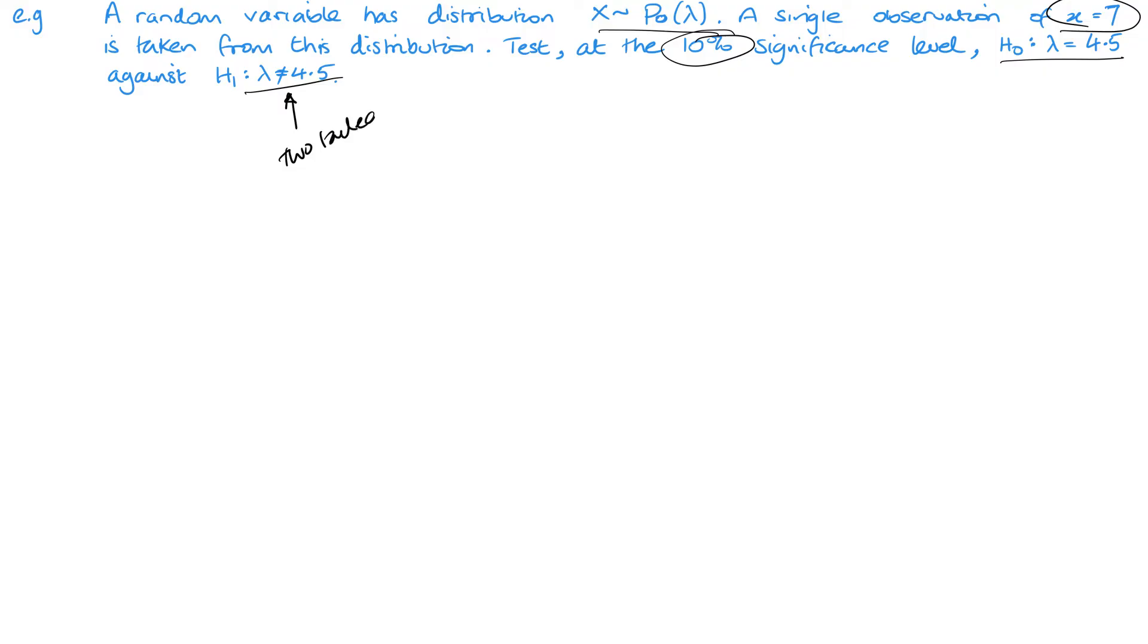Noticing that here this is a does not equal, so it's got to be a two-tailed test. Now I often write, essentially label it notes, but I do often write a few little notes on the side when I'm reading the question just to help me. I know that I'm going to be dealing with the Poisson and that value of lambda is actually going to be 4.5. I know I'm dealing with x is 7. I know that it's going to end up being 10% significance, which will then be 5% for each tail.